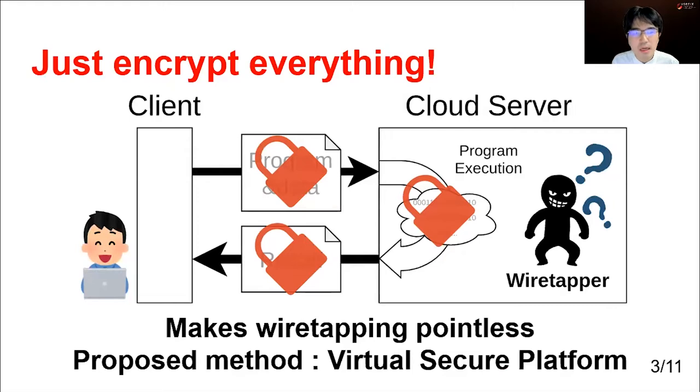So what to do? Just encrypt everything. If the client encrypts everything, the client's information, including the program, can't be wiretapped. We can make wiretapping pointless. This is the basic idea of this research.